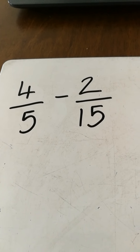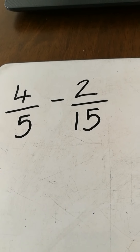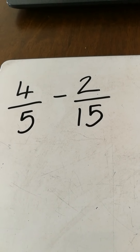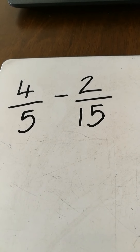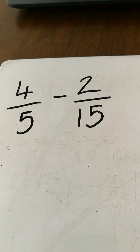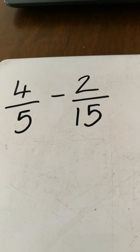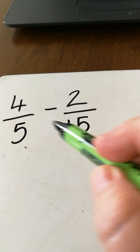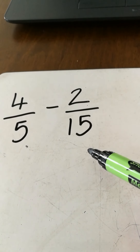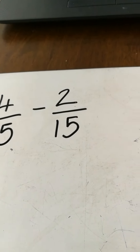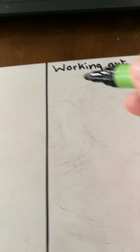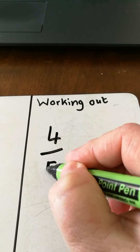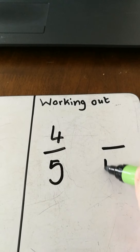Now I've got one where we are subtracting. I've got four-fifths take away two-fifteenths. Again, I'm looking to change one of those so that they have the same denominator. I can see that I can change four-fifths to fifteenths.